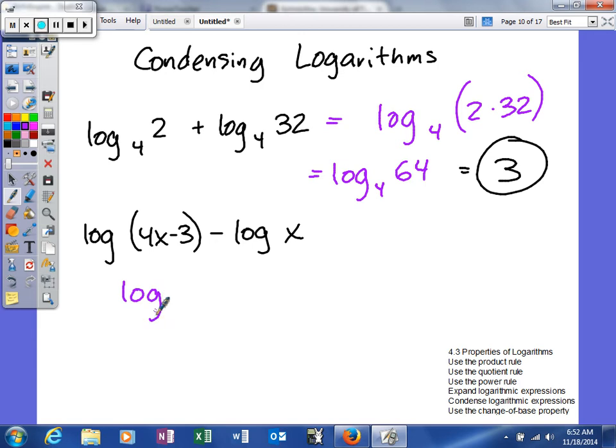So we'll get the log. This is positive so it'll go on the top: 4x minus 3. The x has a negative coefficient so it'll end up on the bottom. So we're taking the log of that whole thing right there. That is the condensed form for both of those logarithms.